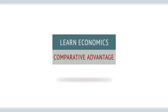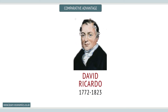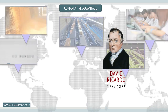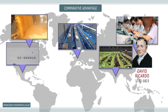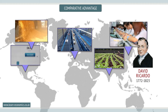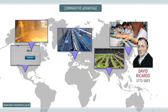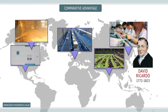Comparative advantage is associated with the 19th century English economist David Ricardo. Ricardo suggested that countries should specialize in producing goods and services for which they have a comparative advantage.